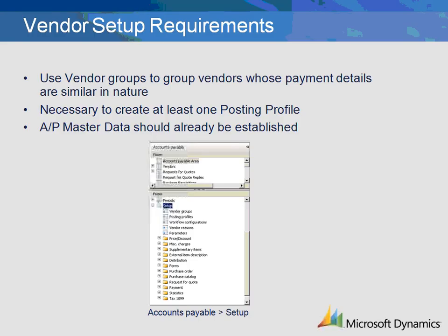Within the setup folder in the accounts payable module are the two forms we'll need to populate prior to the creation of vendor records. We'll want to create vendor groups and at least a single posting profile. Posting profiles define which ledger accounts are used for certain accounts payable related transactions, and also determine which accounts to post to for receipts against purchase orders.